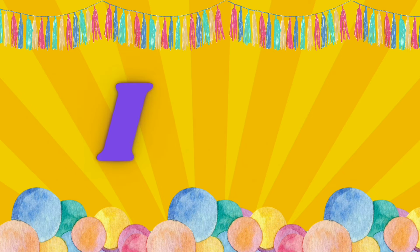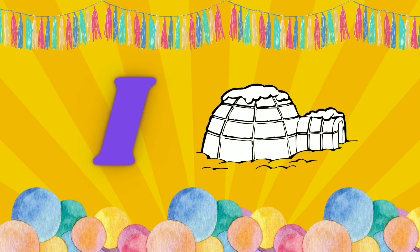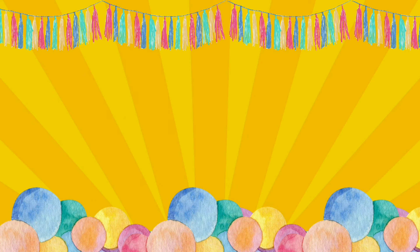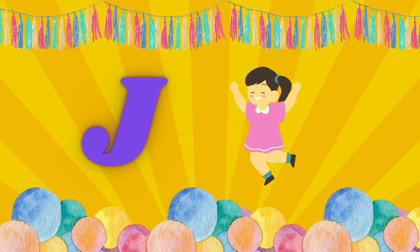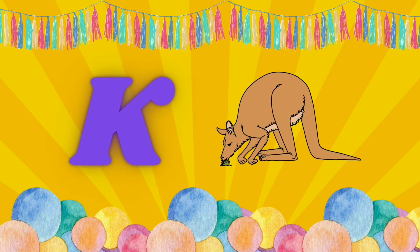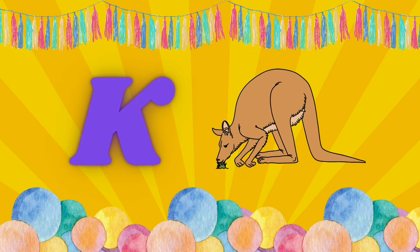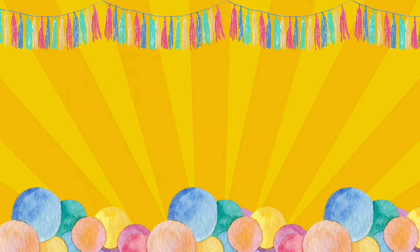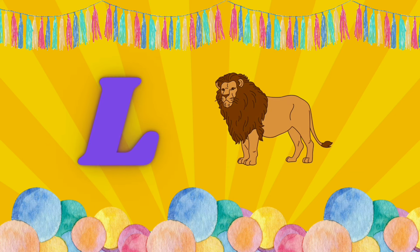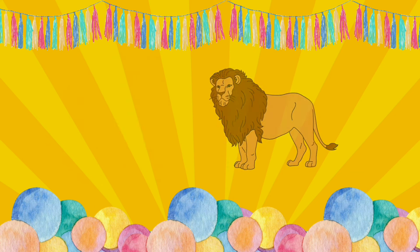I is for Igloo, I-I-Igloo. J is for Jump, J-J-Jump. K is for Kangaroo, K-K-Kangaroo. L is for Lion, L-L-Lion.